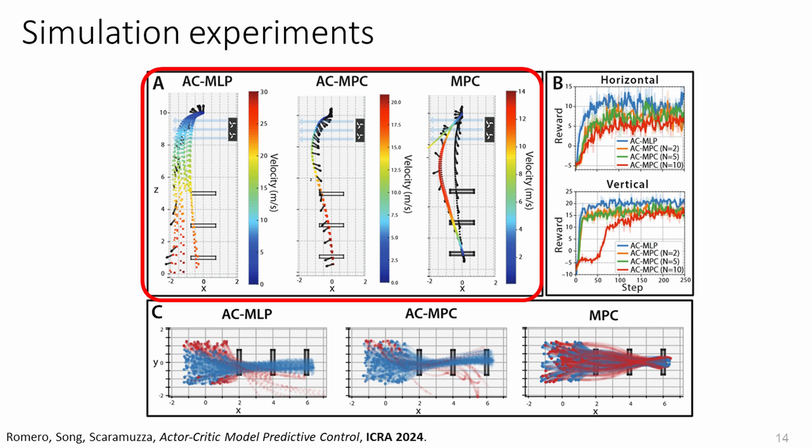We test our approach at the task of flying a drone time optimally through a sequence of gates. In the vertical configuration, we add an external wind disturbance that drives the system to out-of-distribution situations and assess how the policy copes with the unseen situation.